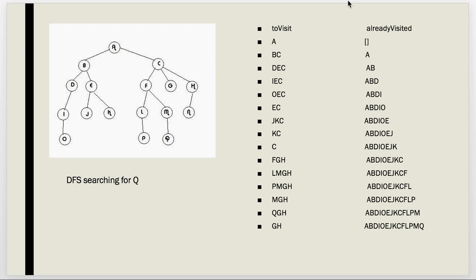We start by putting A on the stack. We take it off, put it on already-visited, and add C then B — remember the top of the stack is what we take off first. So B is the top of our stack. We take B off, put it onto already-visited, and add E then D onto our stack. D is now on top, so we go to D, put it on already-visited, and add whatever is connected — so we put I onto our stack.